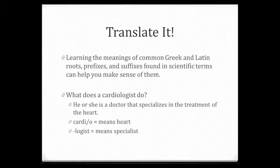The last tip is to translate it. If you can break these words into their word parts — their roots, their prefixes, and their suffixes — it will help you to be more efficient when you learn new vocabulary. For example, what does a cardiologist do? Most of us already know that a cardiologist helps us with our heart. If you learn that the root word 'cardi' — with a slash indicating it's a combining form — means heart, and 'logist' always means specialist, then anytime you see the prefix 'cardi' you'd know it has something to do with a heart, and anytime you see 'logist' you'd know that means a specialist.